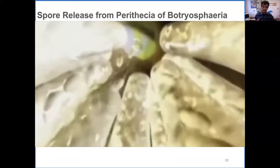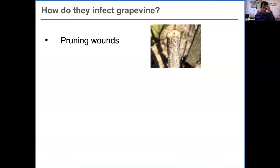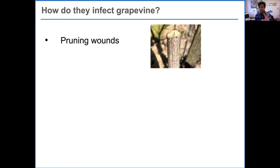A short video shows how fruiting bodies release spores in the vineyard. This gives us an idea of how these fruiting bodies could release their spores and why we need to look at how we can manage and reduce these infections. The primary infection point for grapevine trunk disease pathogens is the pruning wound, because during the dormant season we prune vines every year. Those open wounds become the entry point for spores of these pathogens, which means we must protect pruning wounds to prevent initial infection.